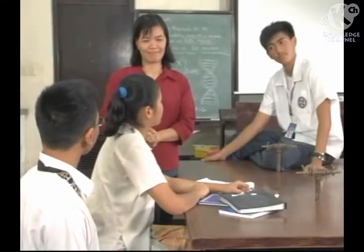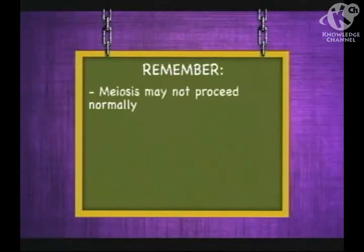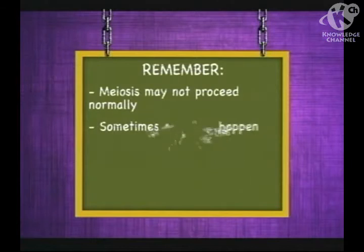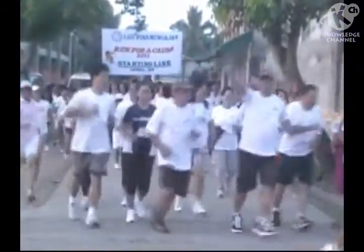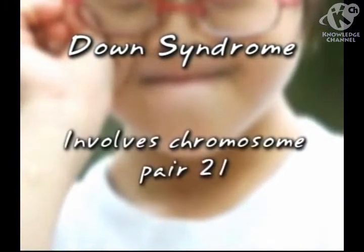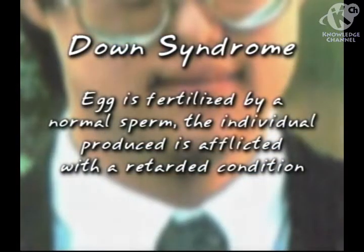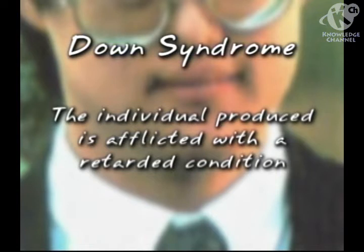Ma'am, what happens when chromosomes in a pair fail to separate from one another during meiosis I? In that case, the resulting egg cell acquires an extra member of a chromosome pair. Meiosis may not proceed normally — sometimes accidents happen that affect the functioning of the spindle fiber or the movement of a chromosome. In humans, some accidents have been known to cause abnormal conditions like Down syndrome, which involves an excess chromosome in chromosome pair 21. If the egg is fertilized by a normal sperm, the individual produced is afflicted with a retarded condition.